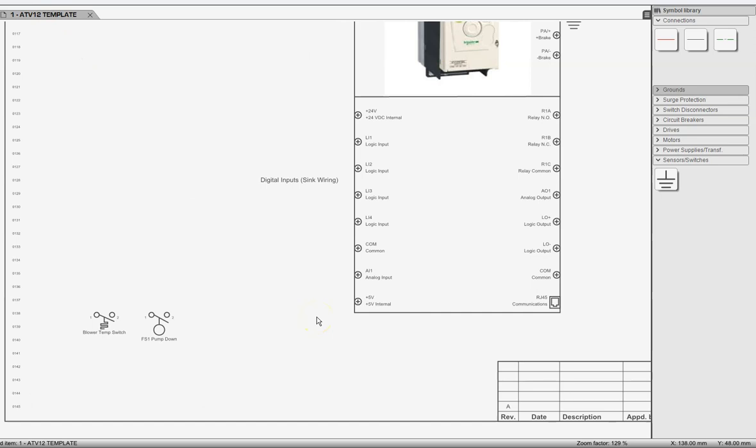Now, I'm going to demonstrate drawing out sync wiring for a single digital input. So now what we're going to do is we're going to take a wire from our common or zero volt. And we're going to take it up to the first logic input. Hopefully, I can line it up okay here. Oh, look at that. It snapped right to the grid.